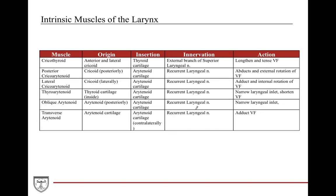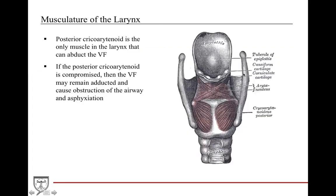There's a nice table available in your book to review this. The key things to pick out are: everything here is innervated by the recurrent laryngeal nerve except for the cricothyroid, which is innervated by the external branch of the superior laryngeal nerve — that's one you want to remember. The other crucial one is the posterior cricoarytenoid, because it is the only muscle that performs abduction — the only one. If the posterior cricoarytenoid is injured, the vocal folds will remain closed and adducted, which can obstruct the airway and cause the person to asphyxiate and die.